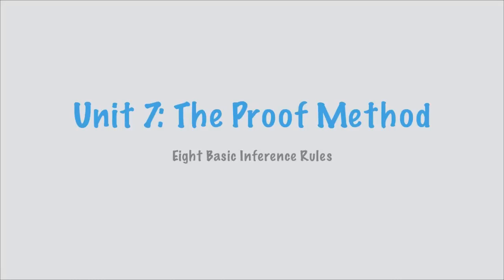Unit 7, the proof method, the eight basic rules of inference. Now that you've mastered truth tables, we're going to ask you to put aside everything you've done with truth tables and start something completely different. The proof method is a different approach to doing problems. As opposed to the mechanical plug-in of truth values for every possible combination, the proof method and the basic inference rules allow you to demonstrate how particular premises lead to a particular conclusion.